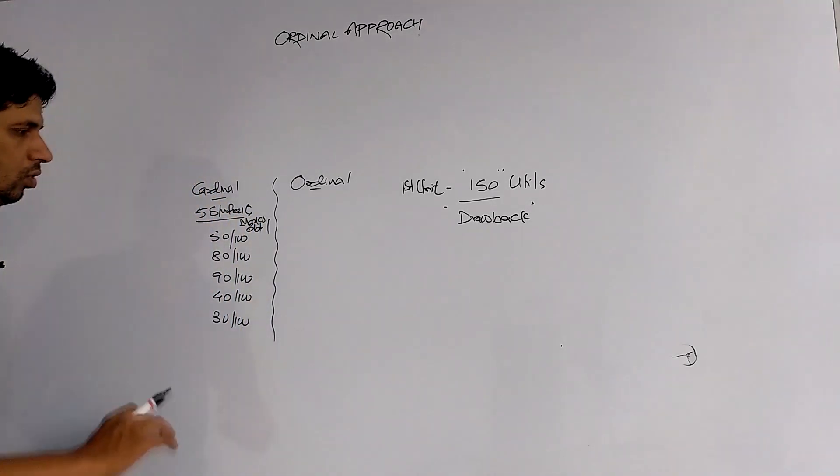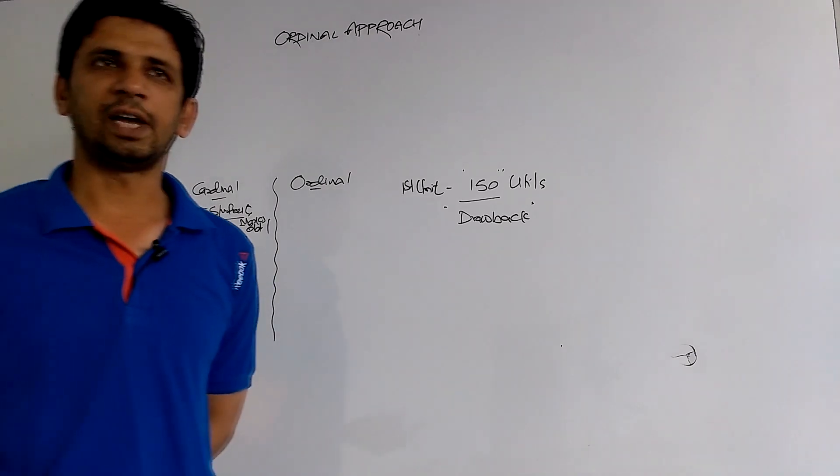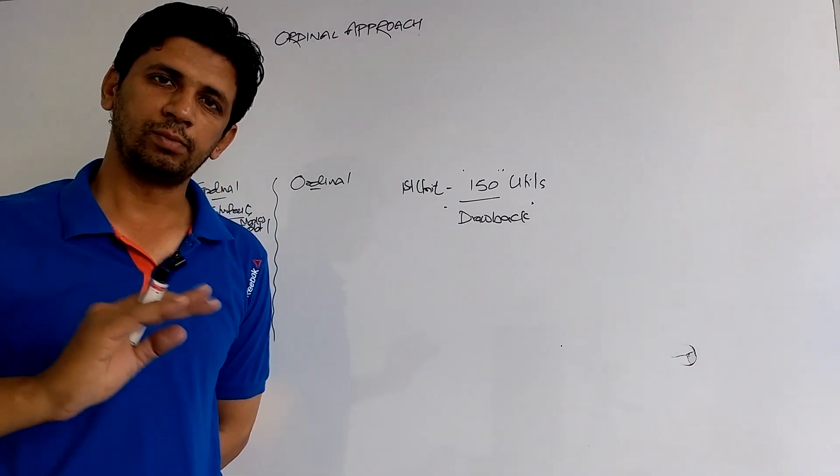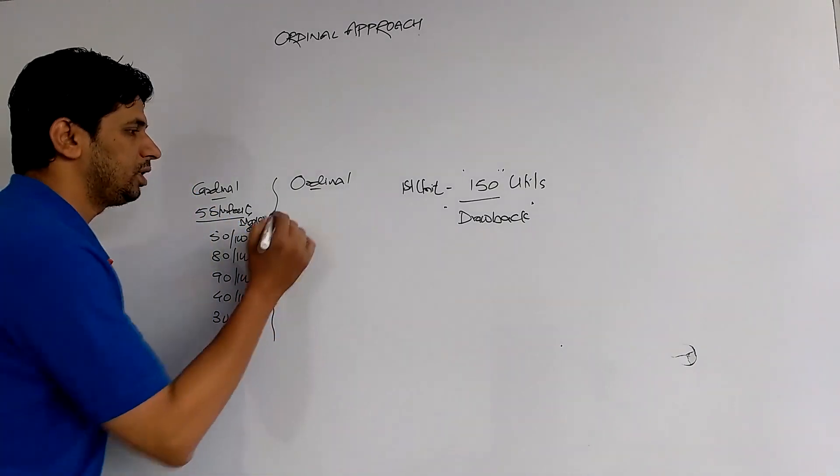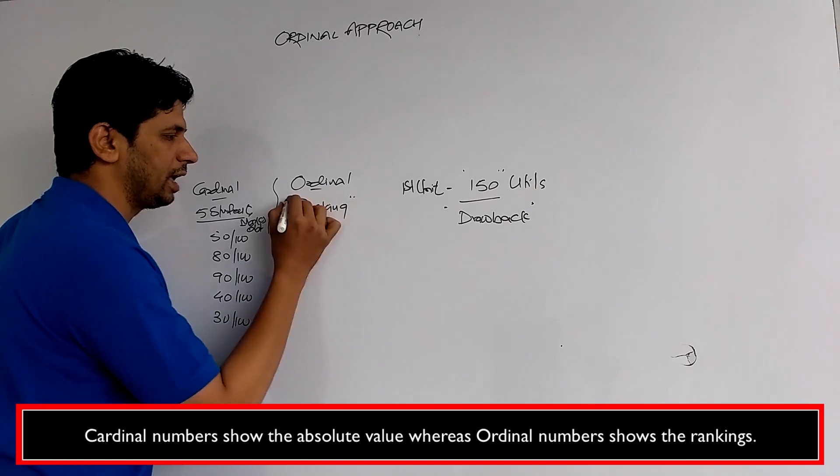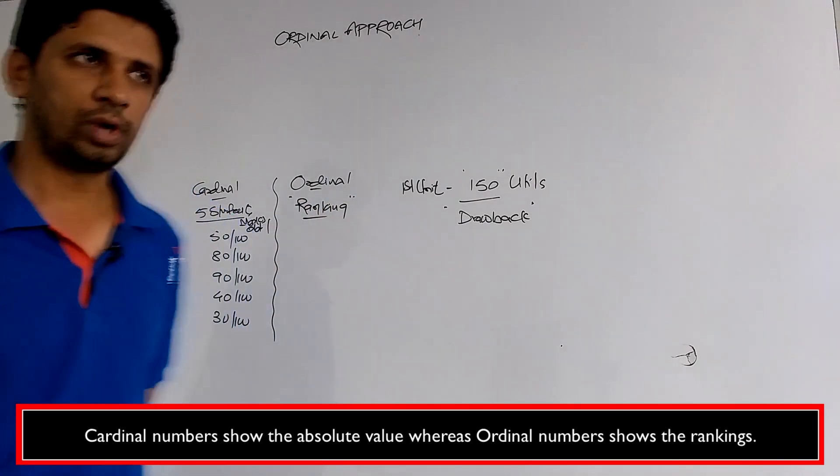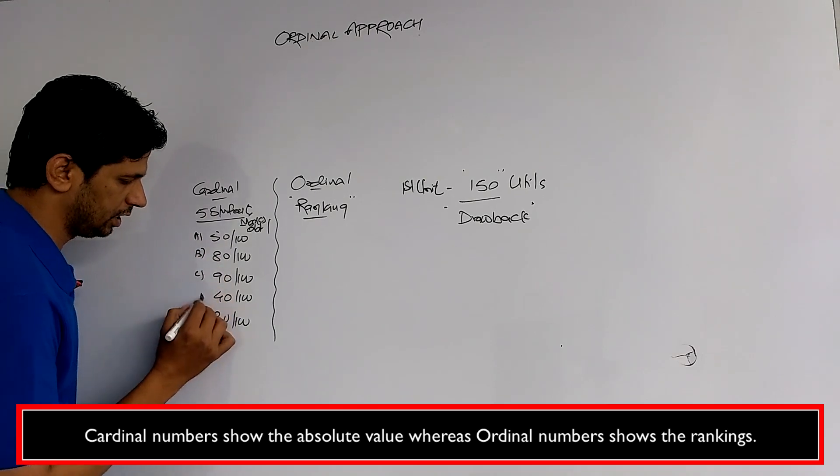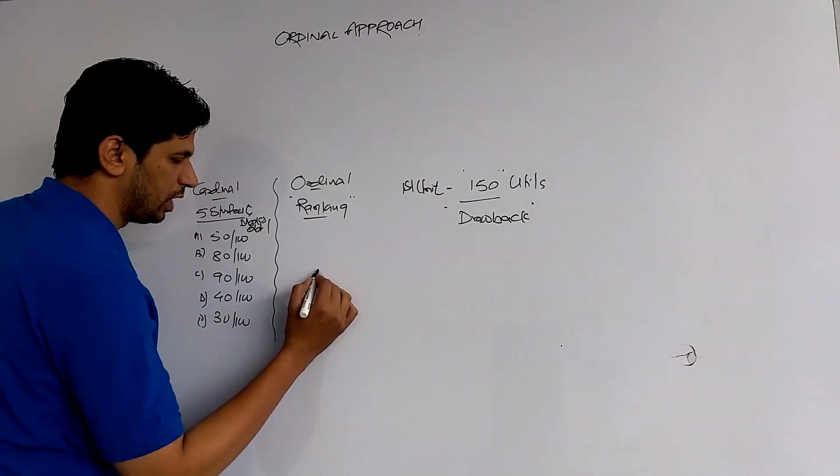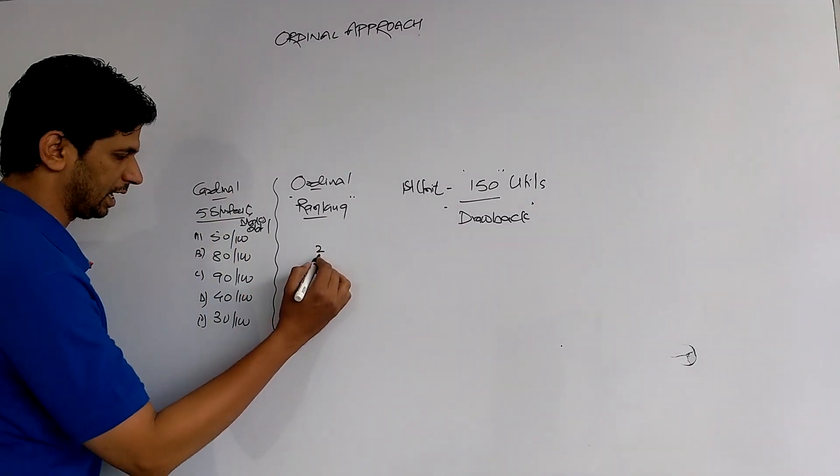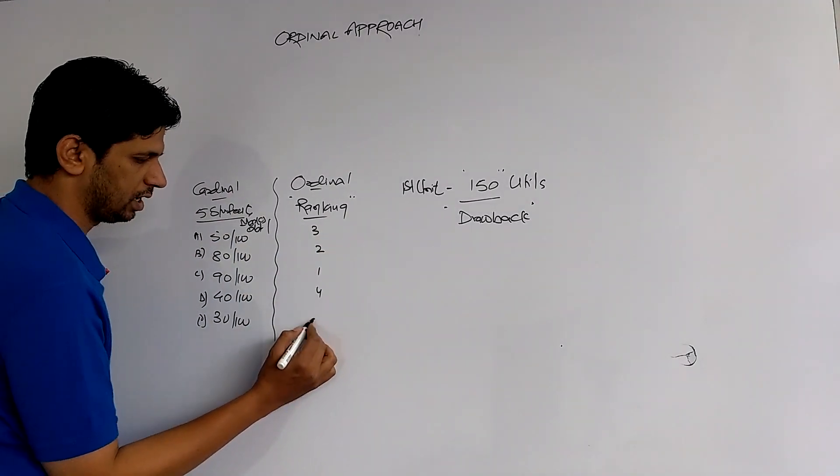Now if we want to express them ordinally, like your exam marks are cardinal, you have to express them according to the ranks. So if we rank them, what would be the ranking? If you see the ranking, for example students A, B, C, D, and E, then student scoring 90 gets first rank, 80 gets second, 50 gets third, 40 gets fourth, and 30 gets fifth.